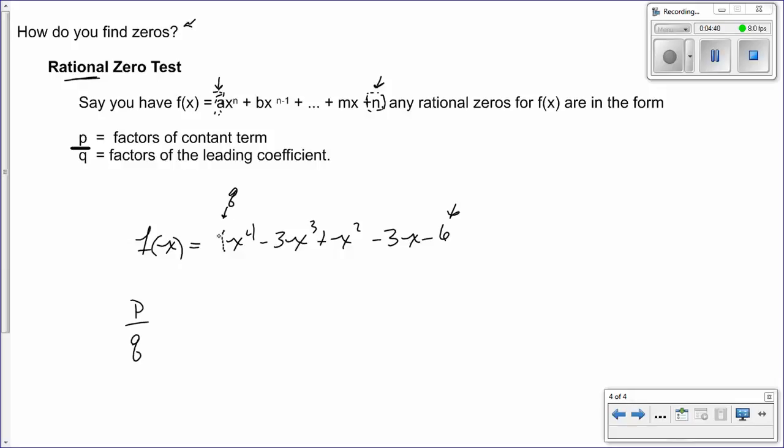Your q is 1, all the factors of 1, which is just 1. And your p is going to be negative 6. So now you would write out your fake fraction, so to speak. We're going to take all of our factors of q and put them on the bottom.